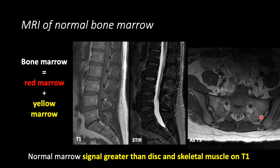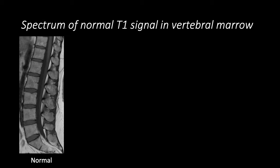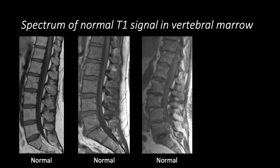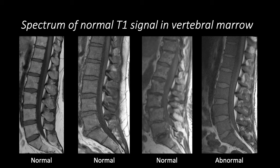Note that bone marrow changes with age. In younger patients, there is a greater proportion of hematopoietic or red marrow, so the bone marrow will be relatively darker than in an older patient who has a higher proportion of yellow marrow. Try to become familiar with the normal signal intensity of bone marrow on T1-weighted images. In all normal situations, the bone marrow is brighter than skeletal muscle or disc. This is an example of abnormal bone marrow: it is diffusely hypointense or dark on T1-weighted images, darker than skeletal muscle and darker than disc, in a patient who has ALL.